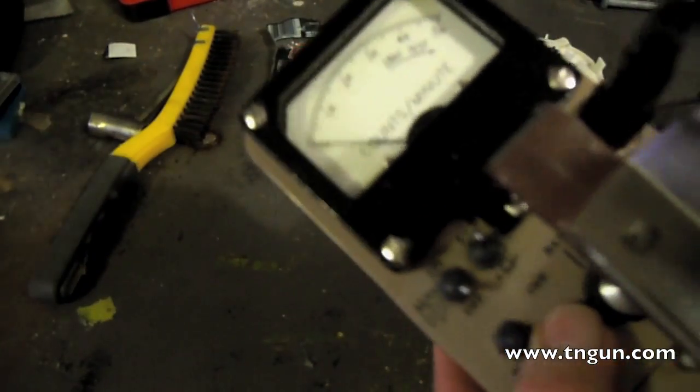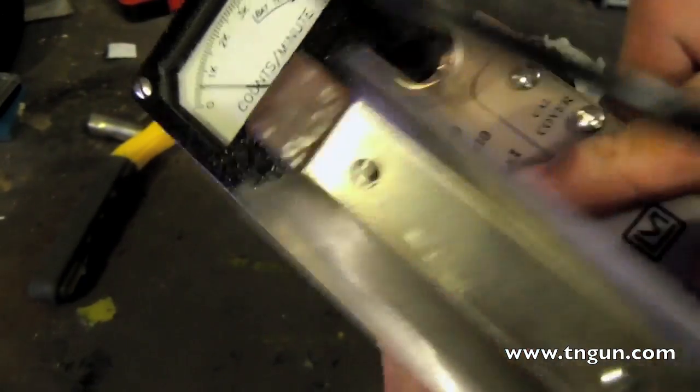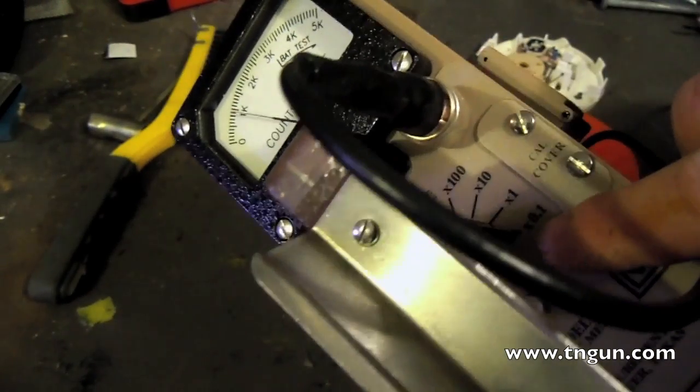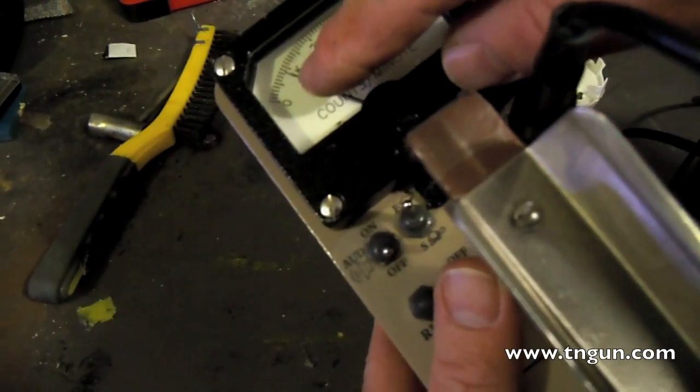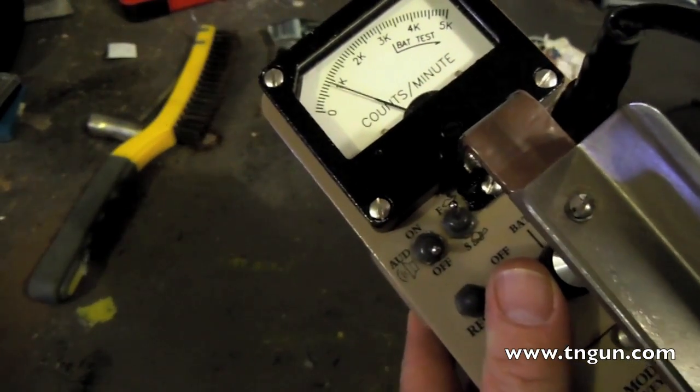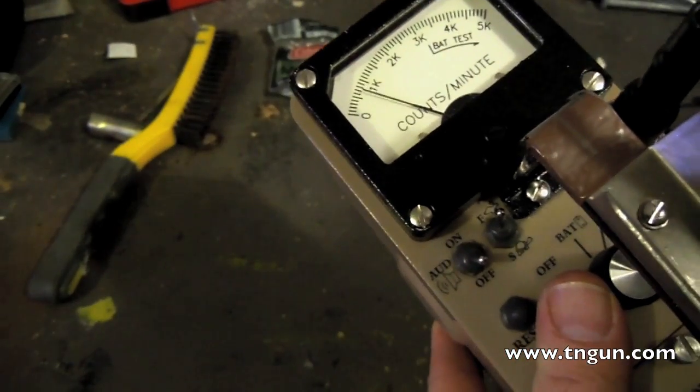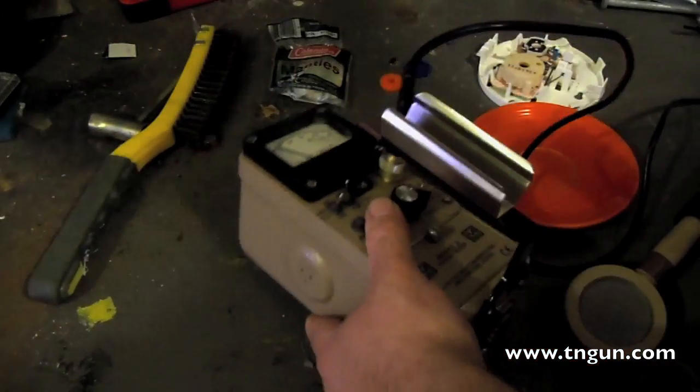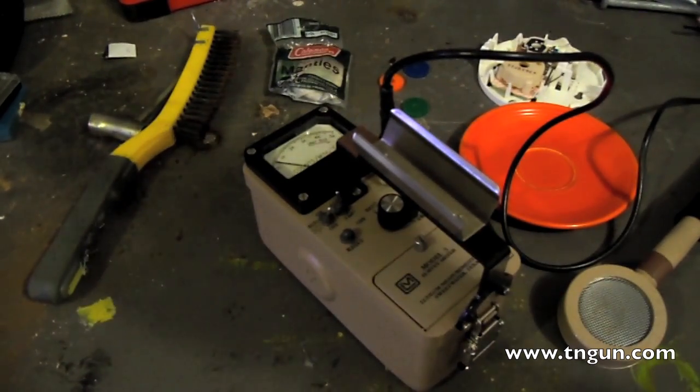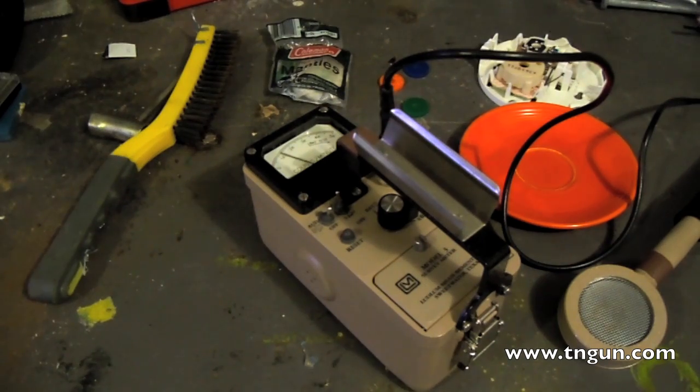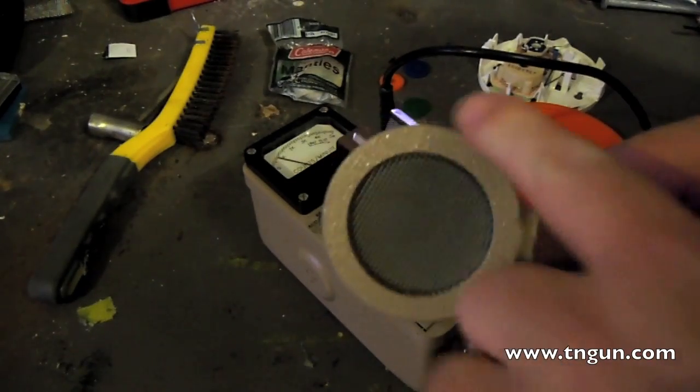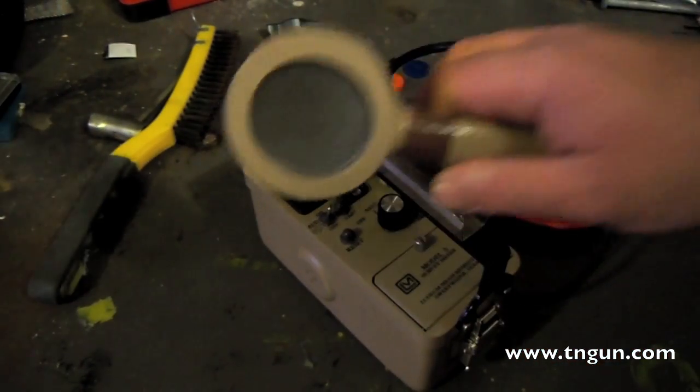If you have a radiation meter with a selectable range like this one does—times 100, times 10, times 1, times 0.1—because it's only got one meter, this picks up various ranges. You always want to start with your selector on your lowest range. Whatever this reads you multiply it by 0.1. So if it's reading at 1,000 (1k), I multiply that by 0.1, so basically it's 100 counts per minute. When an atom is giving off energy, it's giving off radioactivity to become stable, kicking electrons or particles out. That's how many particles are striking this plate per minute.